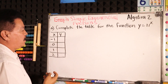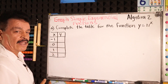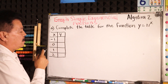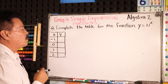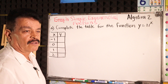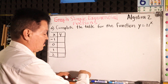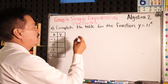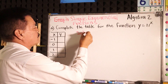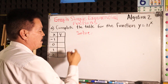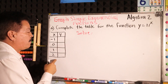We have our table here. The x values are negative 1, 0, 1, and 2, and then we have to find the values of y. First, we have to complete the table.